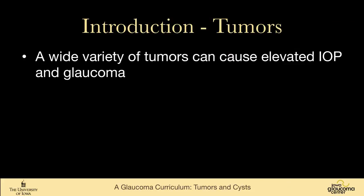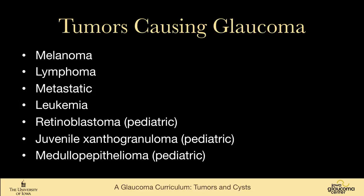There are a wide variety of tumors that can cause an elevated intraocular pressure and glaucoma. Unfortunately, you need to know that melanoma, lymphoma, metastatic lesions, and leukemia can all cause glaucoma. And in children, you would more likely see things like retinoblastoma, juvenile xanthogranuloma, and medulloepithelioma.